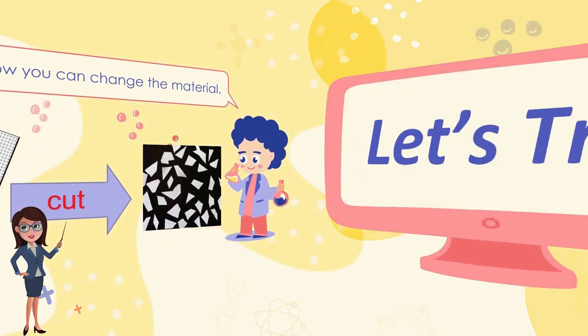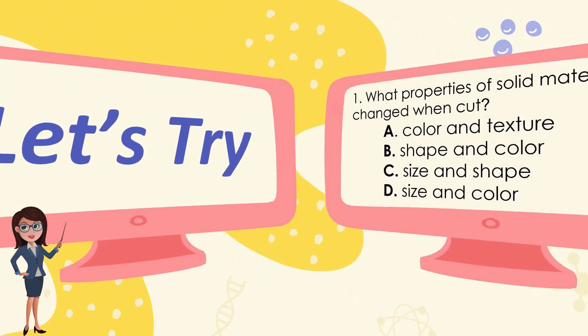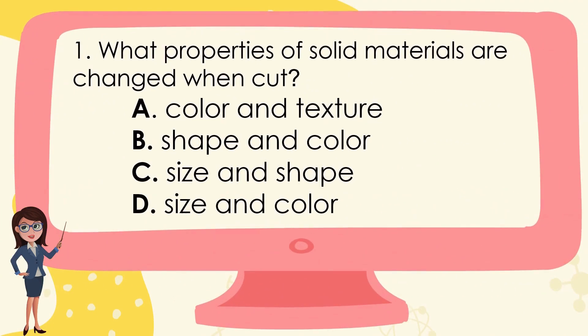Now, let's try what you've learned. What properties of solid materials are changed when cut? A. Color and texture, B. Shape and color, C. Size and shape, D. Size and color. The correct answer is C. Size and shape.